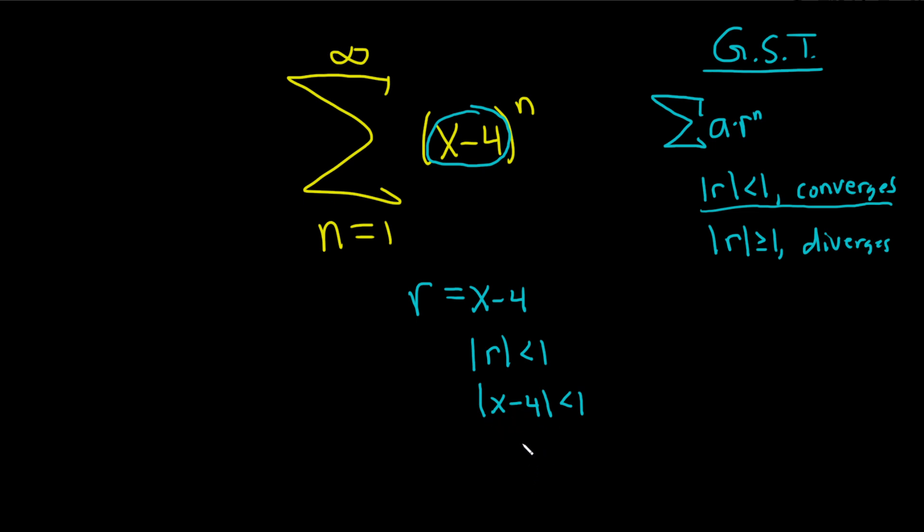When you drop an absolute value, you get a plus and a minus, so you get x minus 4 less than 1 greater than negative 1, just totally worth memorizing.